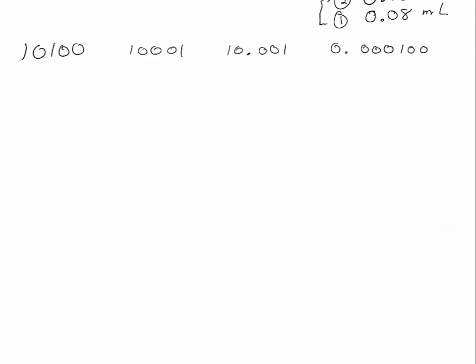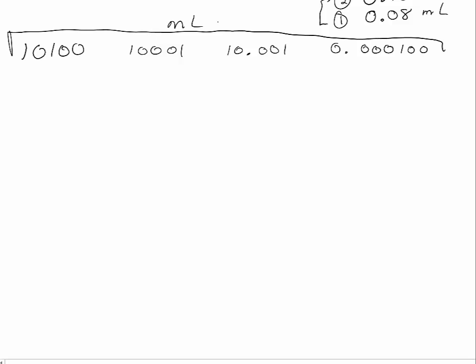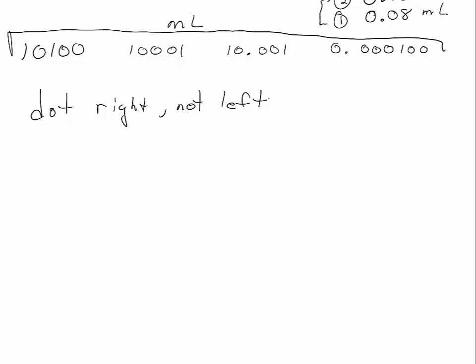What about values that are measurements where we don't know anything about the device used to measure them? When you don't know anything about the device, you can still use the dot-right, not-left method of counting significant figures. Go ahead and count the significant figures in these four measurements — pause the video.